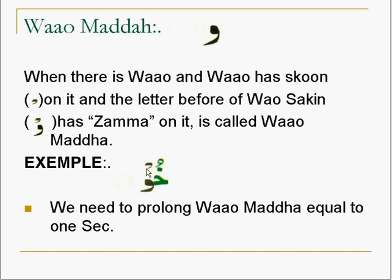The sukoon symbol is used for joining two letters. When this symbol is on the Waw, we check the letter before it. If the letter before the Waw has a damma, it will be Waw Madd. But if it has any other movement like a fatha, it will not be Waw Madd. For Waw Madd, there should be a Waw sakin with a damma on the letter before it.